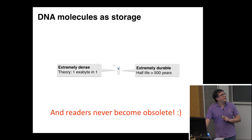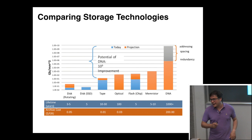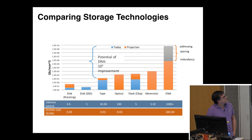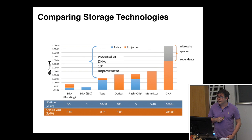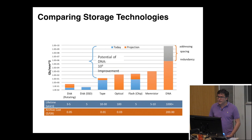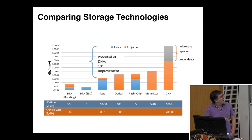In terms of density in gigabits per cubic millimeter: comparing DNA to tape — which is actually the densest form of storage you can buy today — there's about nine orders of magnitude improvement. For lifetime: disk is rated three to five years, optical about 100 years, tape maybe 30 years, and DNA will easily last 1,000 years in the right conditions. So we decided to build a DNA-based archival storage system — a collaboration between CSE, EE, and Microsoft Research.